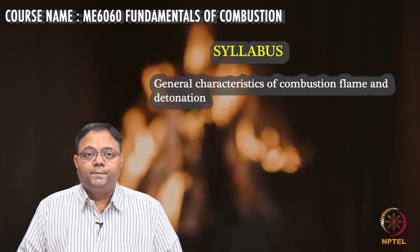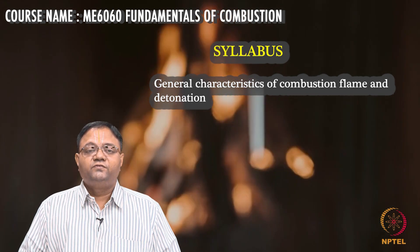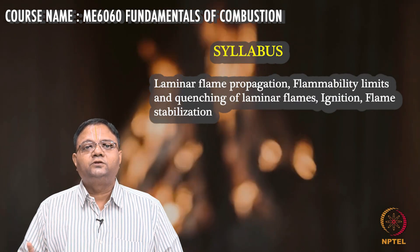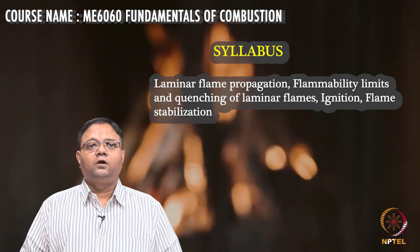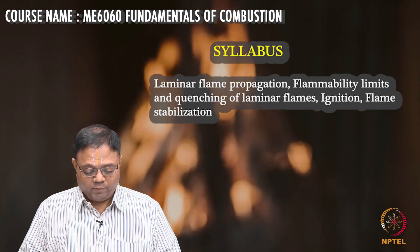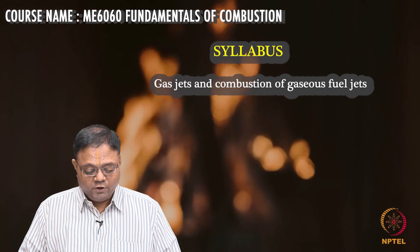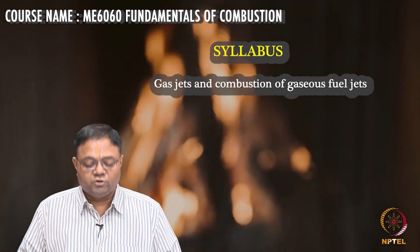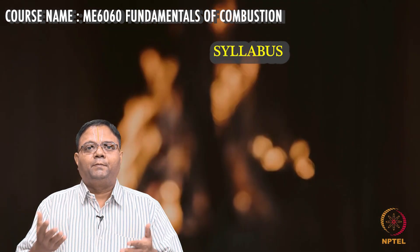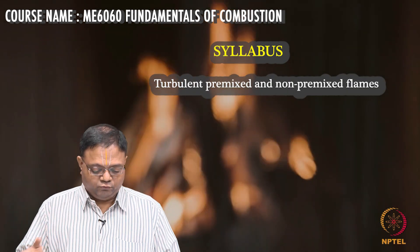Then the combustion process — basically a flame — what is flame, what is deflagration, what is detonation, etc., will be touched upon. Then we will see 2 major modes of combustion. One is called premixed combustion, which will be covered in topic 9 called laminar flame propagation. Then we will cover what is called diffusion or non-premixed mode of combustion, which will be covered in gas jets and combustion of gas fuel jets. These are the laminar parts, and then we will touch upon the turbulent counterparts of these 2 flames in the next topic.